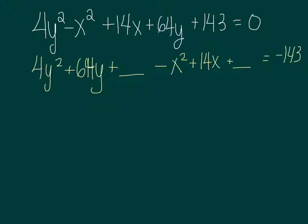Now, again, just like with ellipses, I'm going to factor out that leading coefficient because when I complete the square, you need to have no leading coefficient on the y squared or the x squared. So I'm going to factor it out. I have 4 parentheses, y squared plus 16y plus blank.